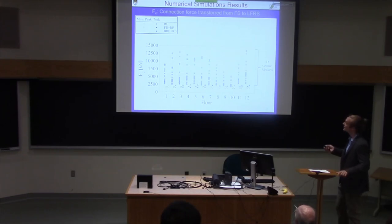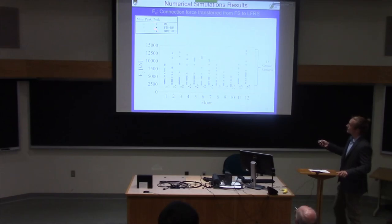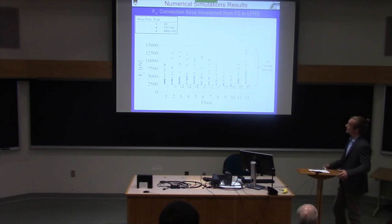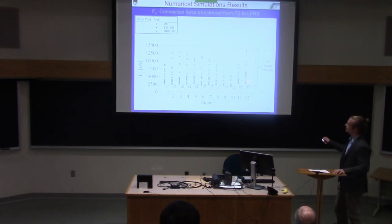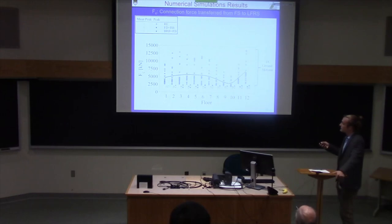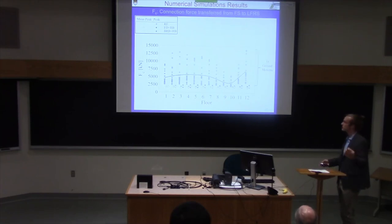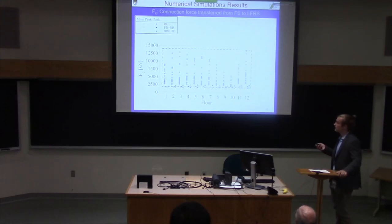This key plot shows the connection force transferred from the floor to the lateral force-resisting system at each floor, with peak values for 18 ground motions shown for three cases: rigid elastic connection, friction device with rubber bearings, and buckling-restrained brace with rubber bearings. The large mean-peak force values in the rigid case are significantly reduced with deformable connections. Even more importantly, the large dispersion in results is also tremendously reduced.